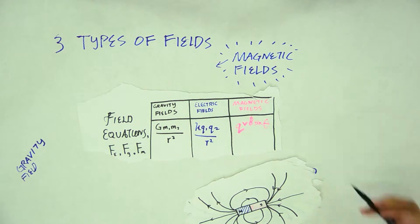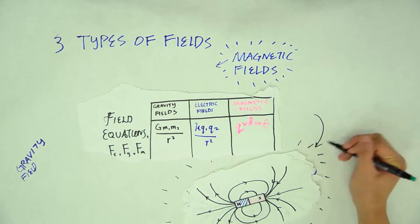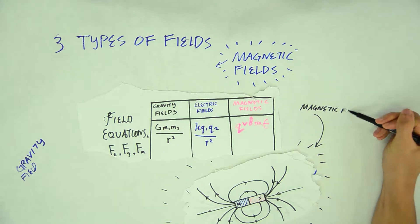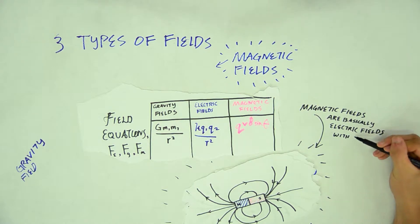In general, we could say that magnetic fields are basically electric fields with moving charged particles. Now, let's discuss the principle of electromagnetism. The principle of electromagnetism states that a moving electric charge produces a magnetic field.